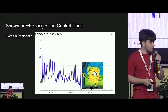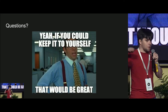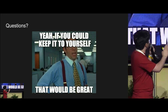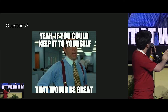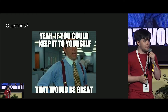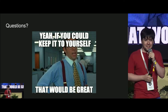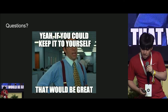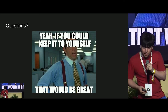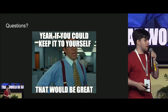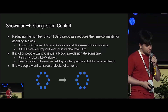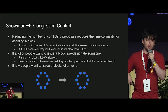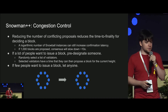I apologize for ripping through — there's a lot of information. Are there any questions? The question was about Snowman++: are we concerned about exploiting the random number algorithm used to designate validators?